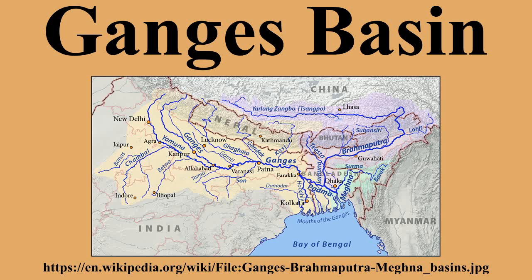The basin has a population of more than 500 million, making it the most populated river basin in the world. The basin comprises semi-arid valleys in the rain shadow north of the Himalaya, densely forested mountains south of the highest ranges, and scrub-like foothills and the fertile Gangetic plains.